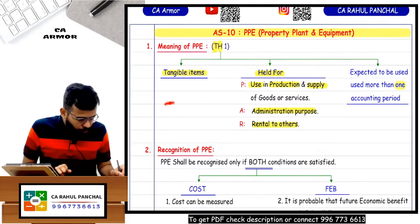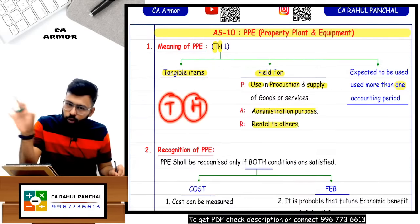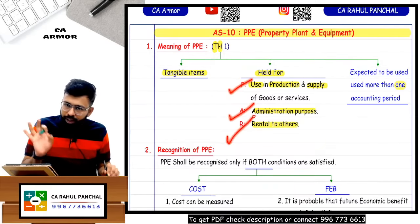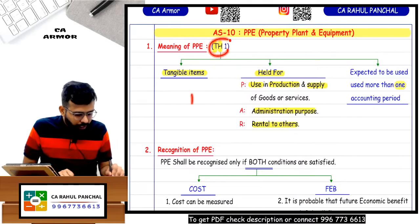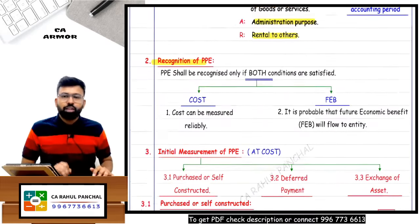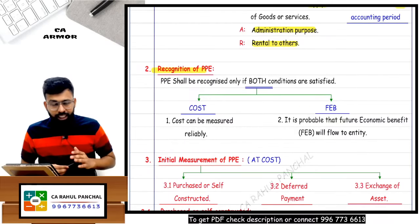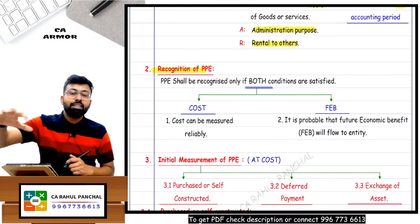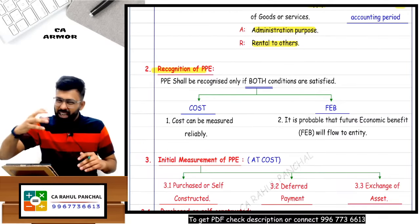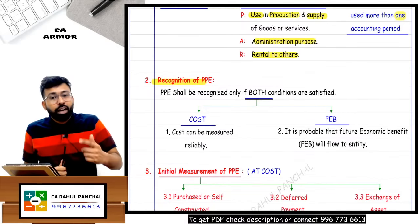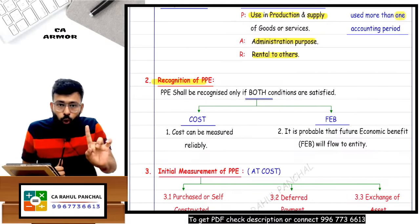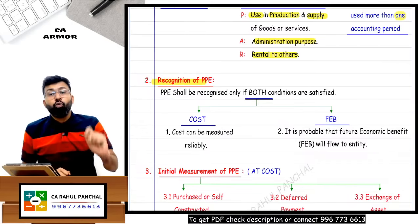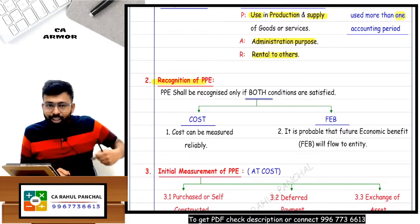So we've understood: PPE should be tangible, held for use in production, administration, or rental, and its life should be more than one period. Now, if you go outside, you can see many PPEs - even a bus is a PPE: tangible, life more than one year. A train is PPE too. But will you record that in your balance sheet? No. When will you recognize those in your books of account?